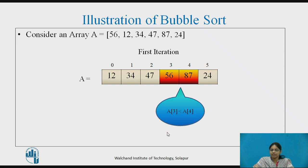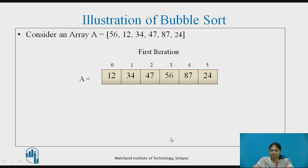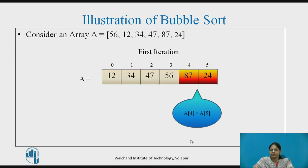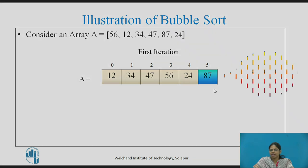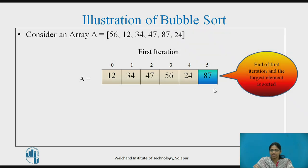Now the comparison is done between A[3] and A[4]. Here A[3] is lesser than A[4], so no swapping is done and the elements remain as they are. Next, the comparison is done between A[4] and A[5]. A[4] is greater than A[5], so swapping is done. After swapping, 87 is placed at the end. This is the end of the first iteration, and the largest element is now sorted.